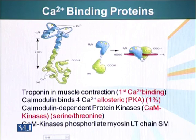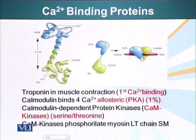Calmodulin binds these calcium ions in cooperative binding, just like we saw in pKa. First, one calcium ion binds and causes a conformational change. The other calcium ion binding site is exposed, and the next calcium ion binds. Ultimately, when calmodulin has bound four calcium ions, it can do several things.